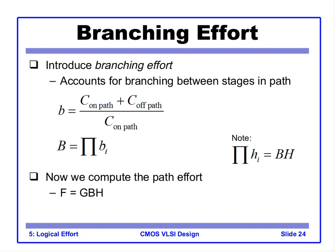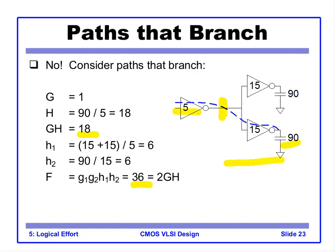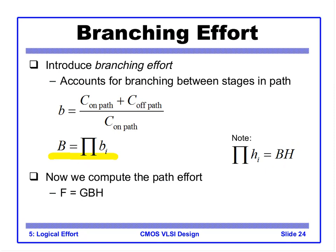To account for branching, we introduce the branching effort b = (capacitance on-path + capacitance off-path) / capacitance on-path. Capital B is the product of all individual branching efforts. The path effort formula becomes F = G·B·H. In the previous symmetric branching example, B = 2 since there are two equal branches, and F = G·B·H = 1·2·18 = 36, matching the correct value.